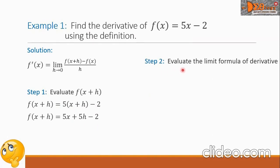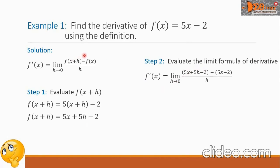For step two, we evaluate the limit formula of the derivative. We write f prime of x equals the limit of 5x plus 5h minus 2, from step one, minus f of x, which is the given function 5x minus 2, all over h as h approaches 0. Let us simplify by removing the grouping symbol in our numerator.